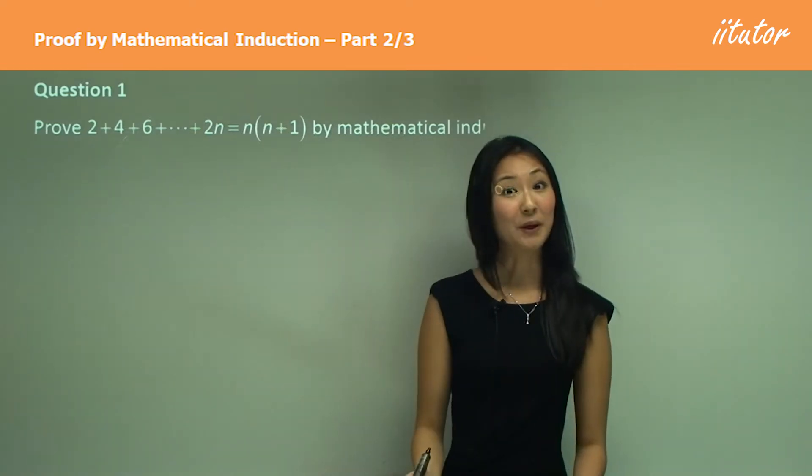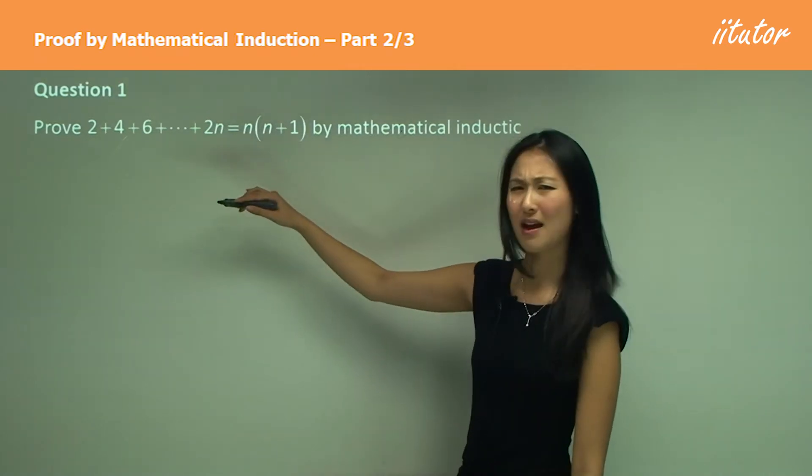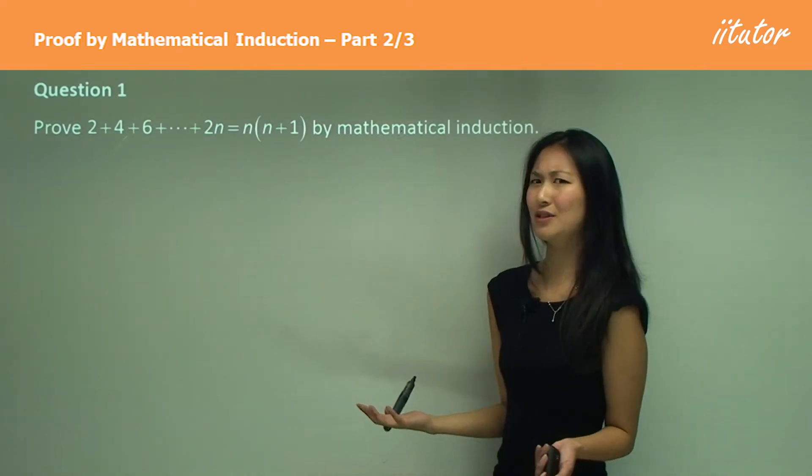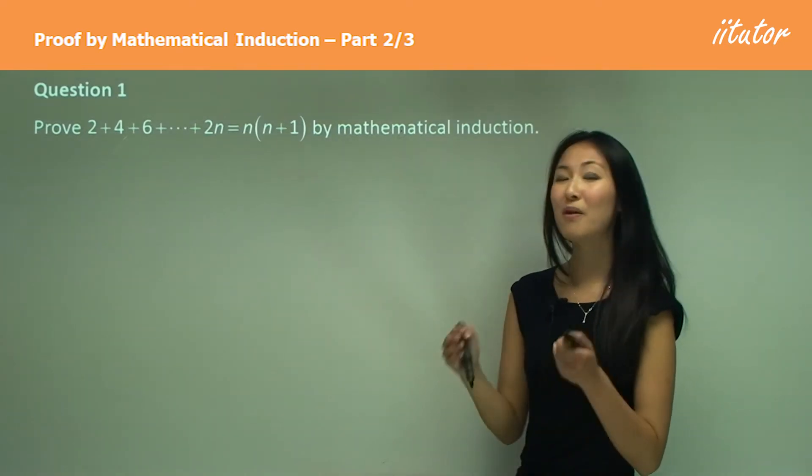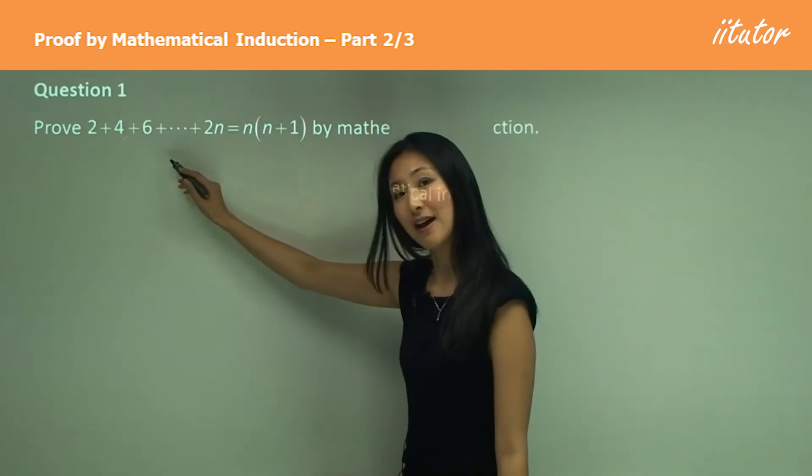Now the other thing I want you to understand is what that 2n here actually means. What does it mean 2 plus 4 plus 6 so on until 2n? What does that 2n stand for? Well, that 2n is a general formula for each of these values.